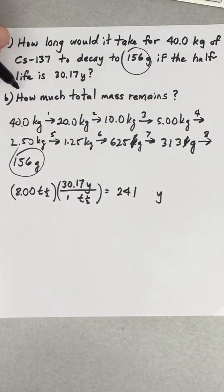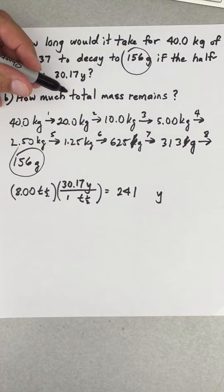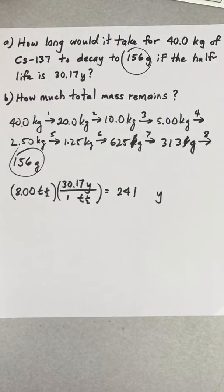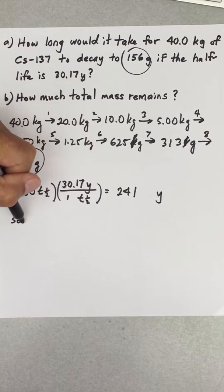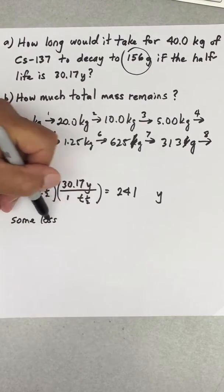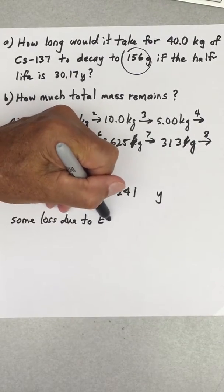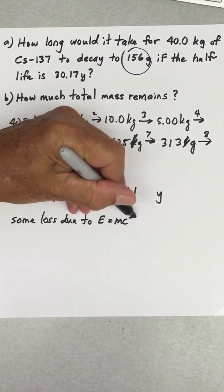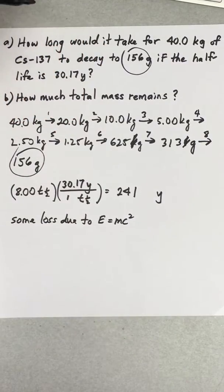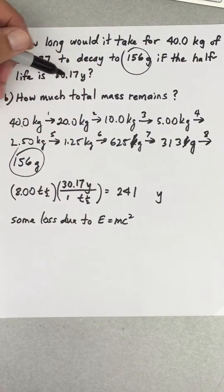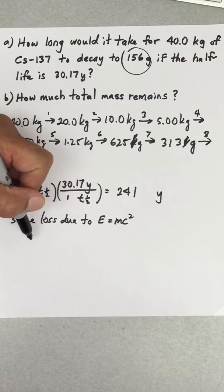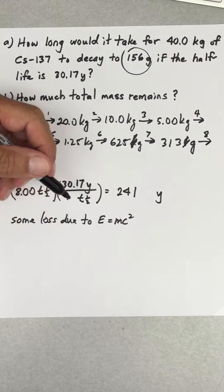If you look at part b, how much total mass remains? What I'm trying to get you to do here is think about the law of conservation of mass. You're going to have some mass loss due to E equals mc squared, but this is going to be a very small amount.